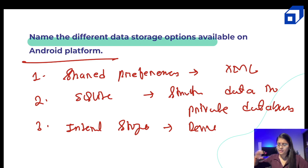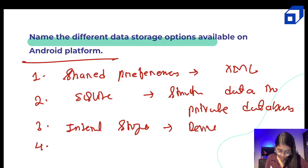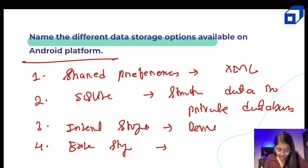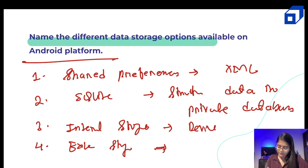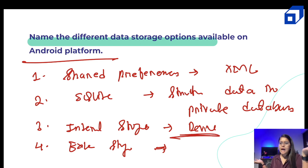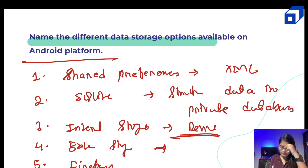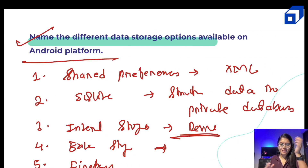Then you have external storage as well — it stores data in the file system but it can be accessed by all apps on the device, not specifically by that one app. So if there is data which should be accessible by all other apps on the phone, external storage handles that. We also have Firebase, which is very handy and easy. These are the different data storage options available for the Android platform.